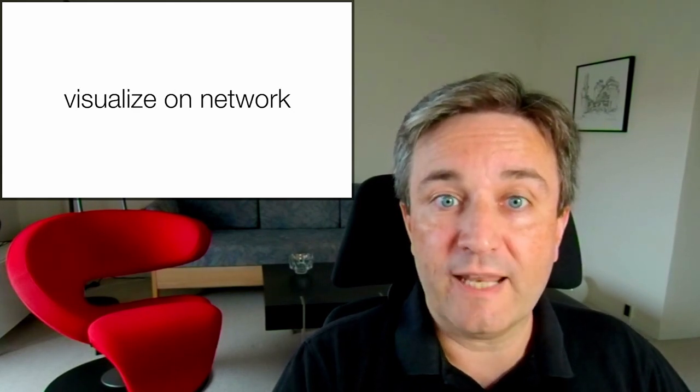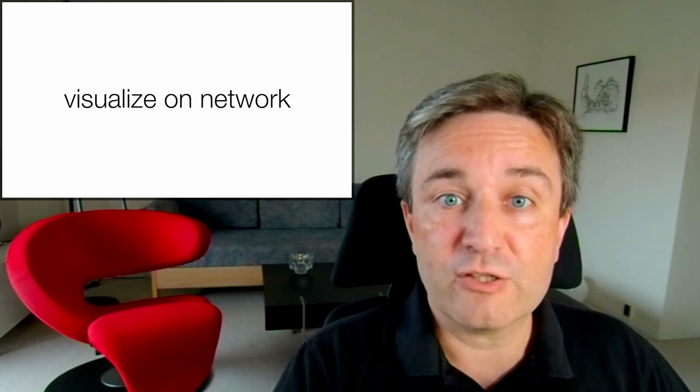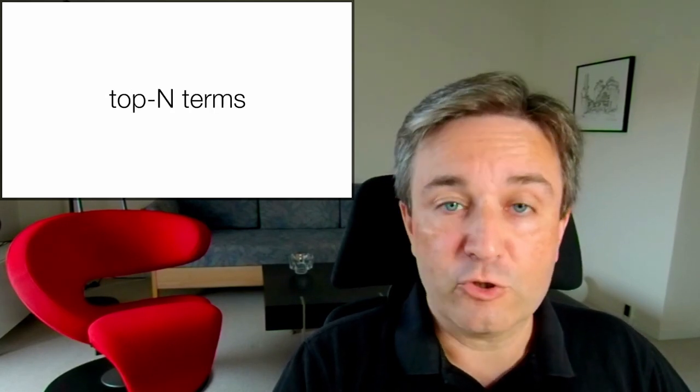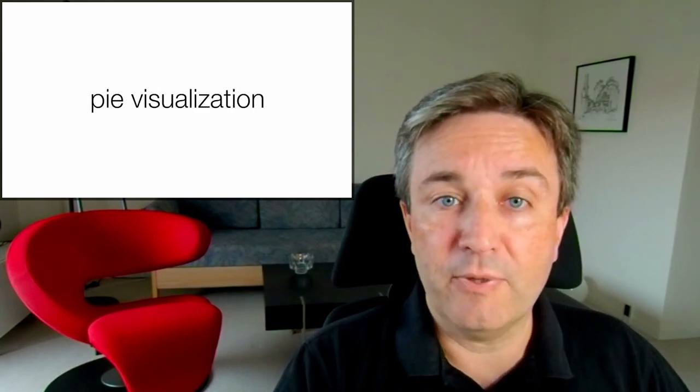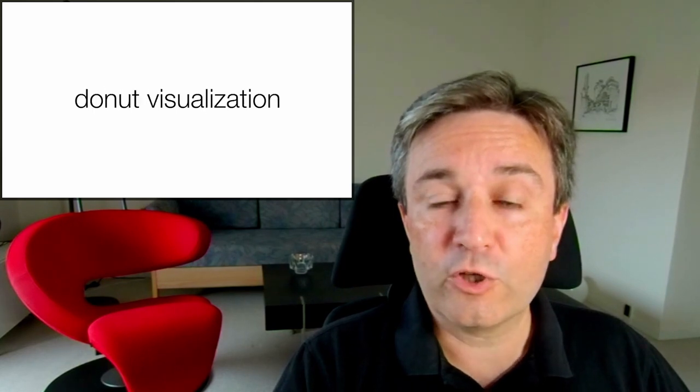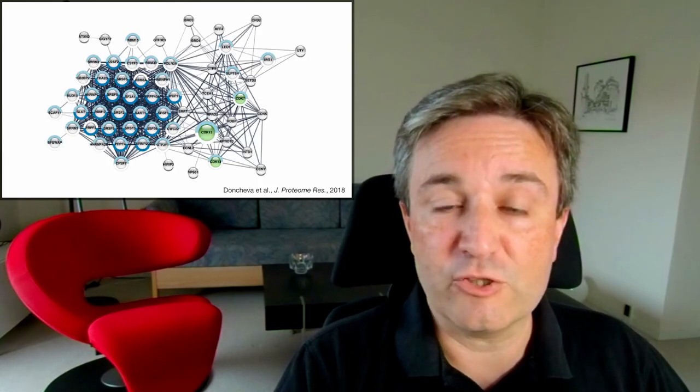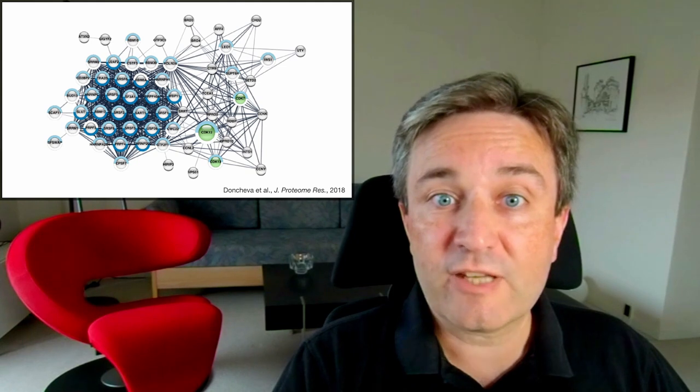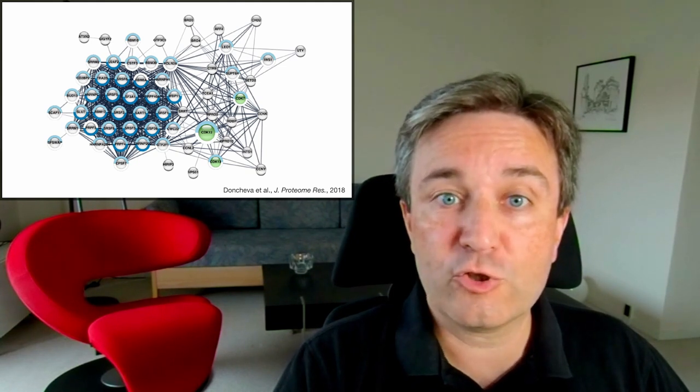Once you are happy with your selection of terms, you can visualize them on the network showing the top terms either in a pie visualization or donut visualization like this. You can see in this case that two enriched terms are shown as the two halves of the circles around each node.